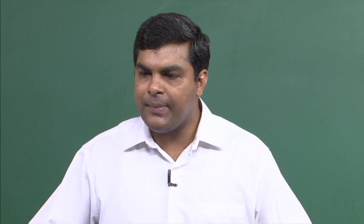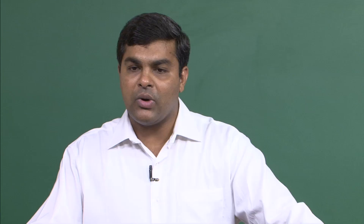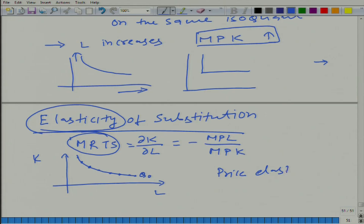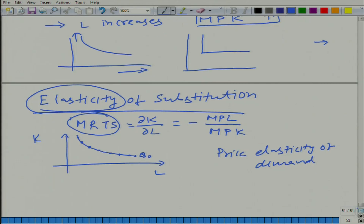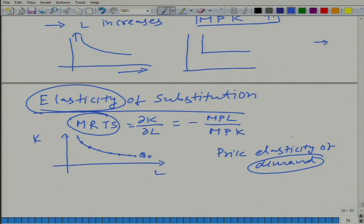MRTS can proxy for the price ratio at the optimal level. What is elasticity? Going back to what we learned about price elasticity of demand — the percentage change in quantity due to a 1 percent change in price — it is the rate of proportional change in demand with respect to proportional change in price.